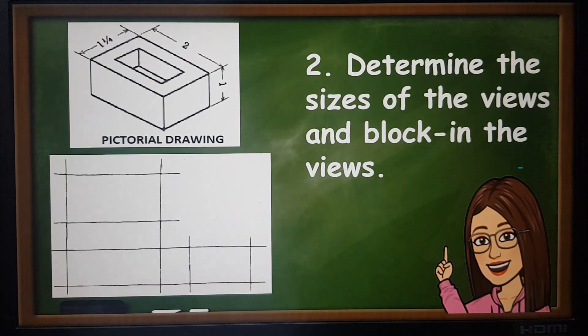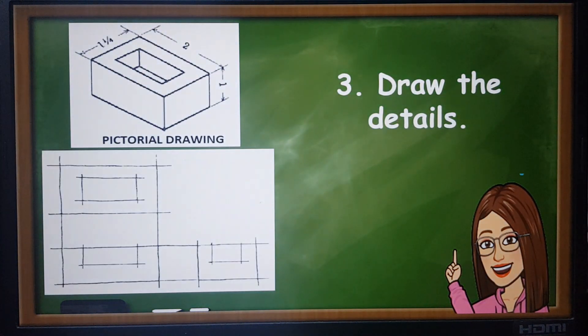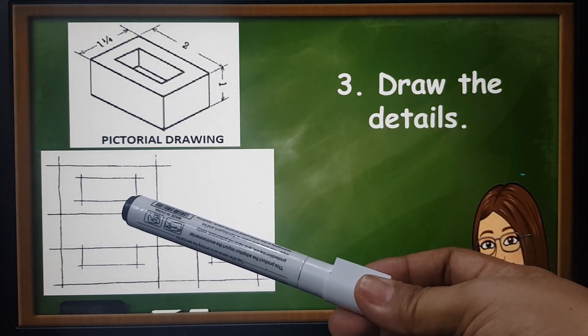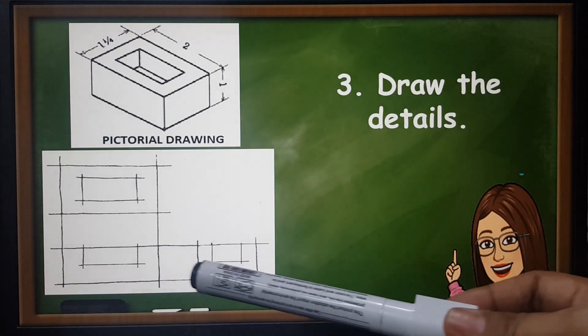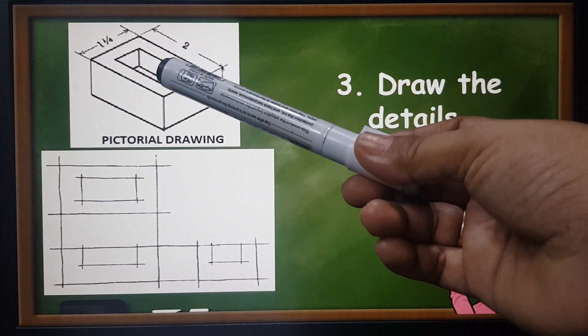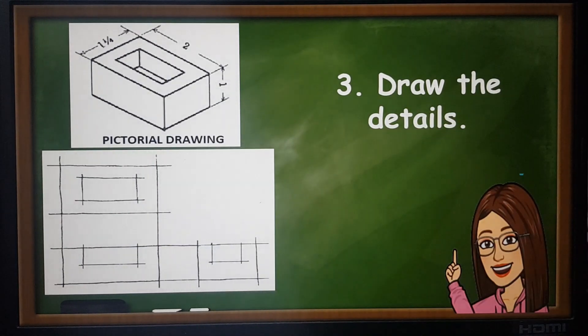Next, number three: draw the details. This time you're going to draw the details from your pictorial drawing to your orthographic sketches. You're going to trace the details from the top, front, and right side.